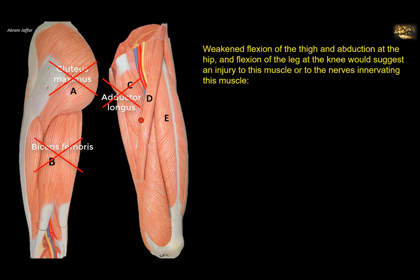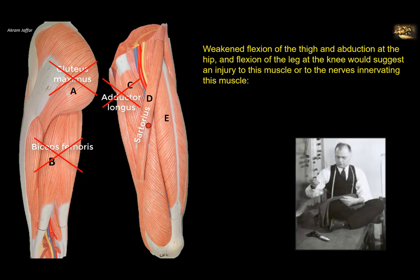D is the long slender muscle on the front of the thigh that arises from the anterior superior iliac spine. It is the sartorius muscle. It forms the lateral boundary of the femoral triangle, goes downwards and medially, crosses the knee joint, and is inserted into the upper part of the medial aspect of the tibia. The sartorius — the tailor's muscle, as sartor means tailor — helps in attaining the tailor's cross-leg position. This implies flexion, abduction, and lateral rotation at the hip, as well as flexion at the knee joint. So this muscle can do the thigh abduction and flexion, as well as flexion of the leg at the knee joint.